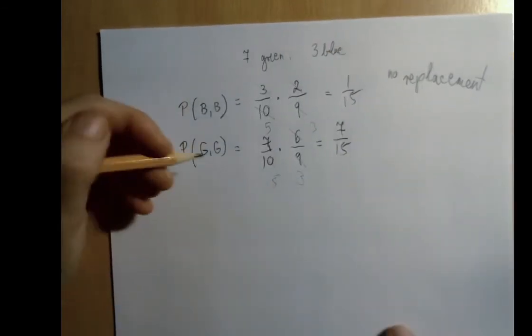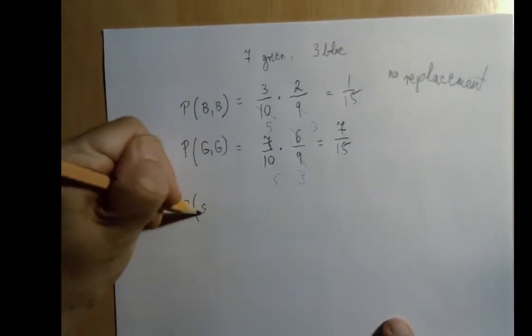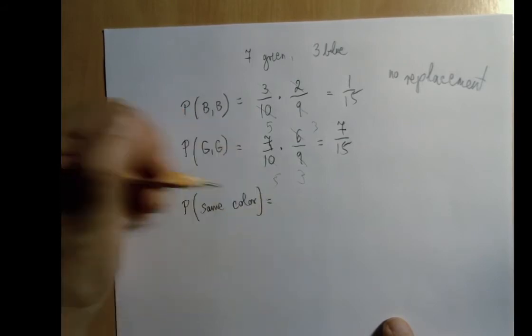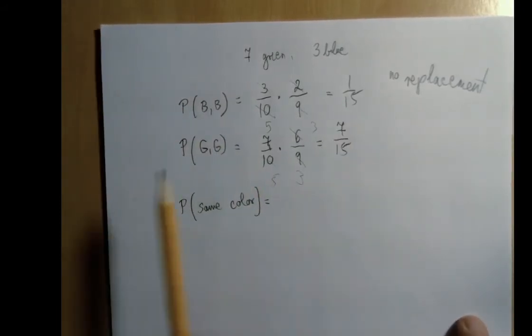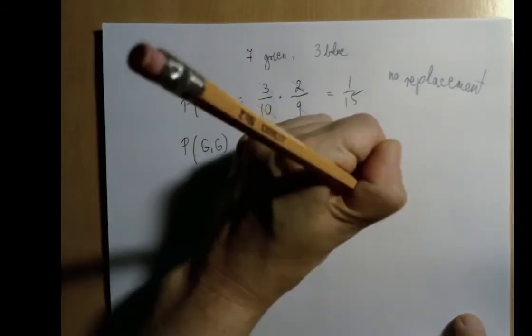So now, what is the probability that they have the same color? Well, the probability that they're both blue is 1 out of 15. The probability that they're both green is 7 out of 15. So altogether, it's 8 out of 15.